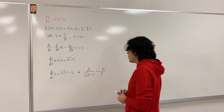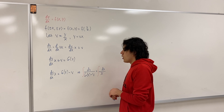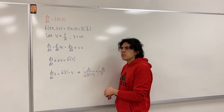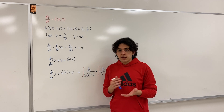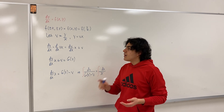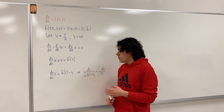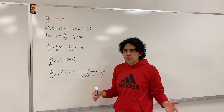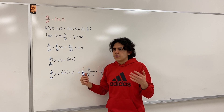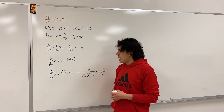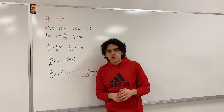You integrate both sides as you would typically do with a separable differential equation. Once you do that, you get a function of v on one side and a function of x on the other. In most cases you can solve for v explicitly, and once you do, you undo the substitution to find y in terms of x. This is the main theory behind homogeneous differential equations — the next video will walk through a full example.